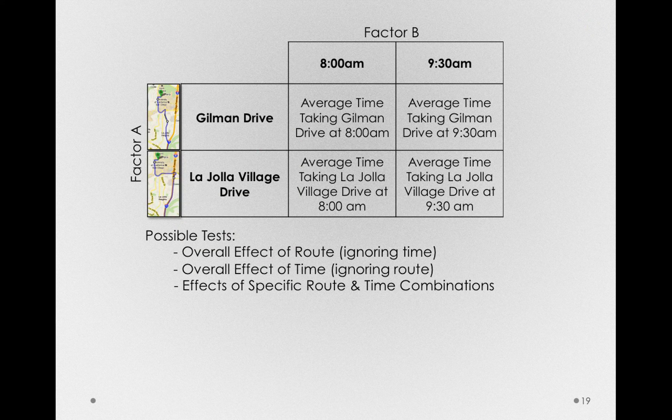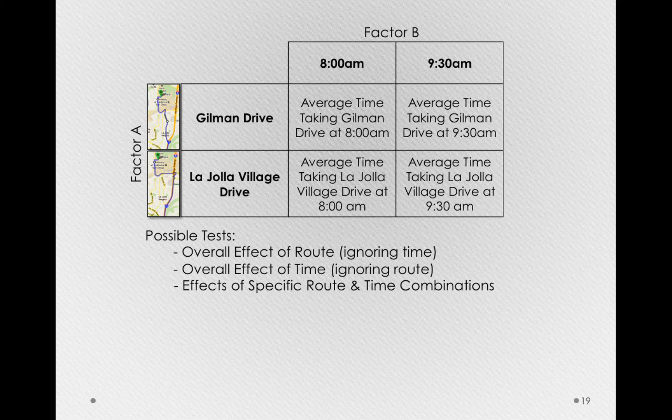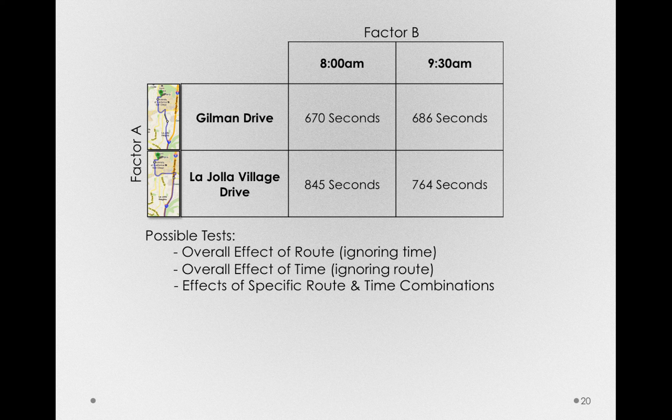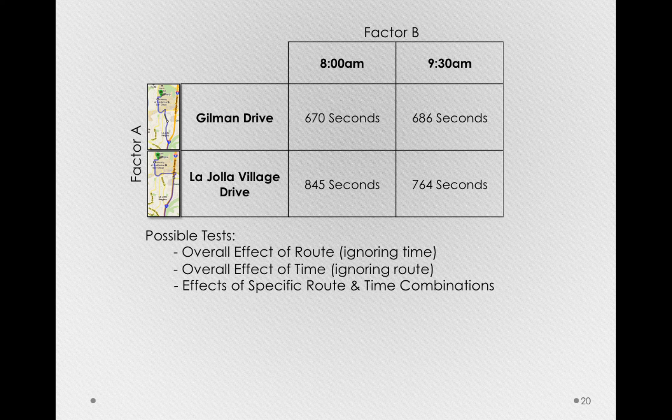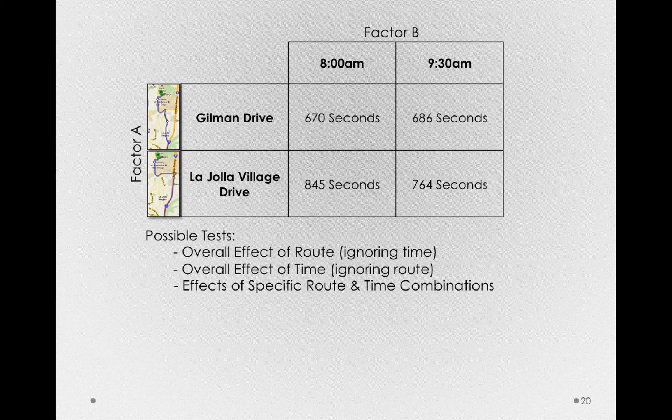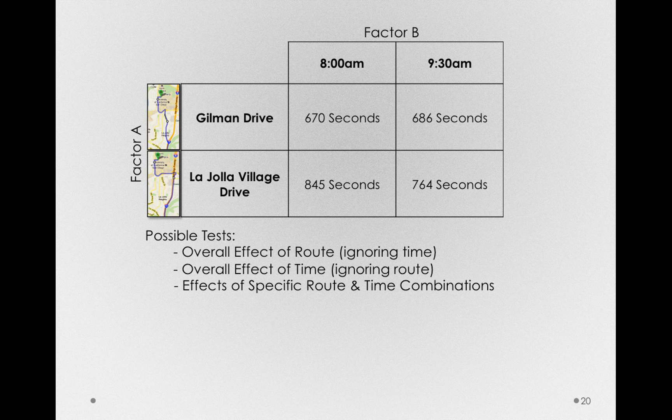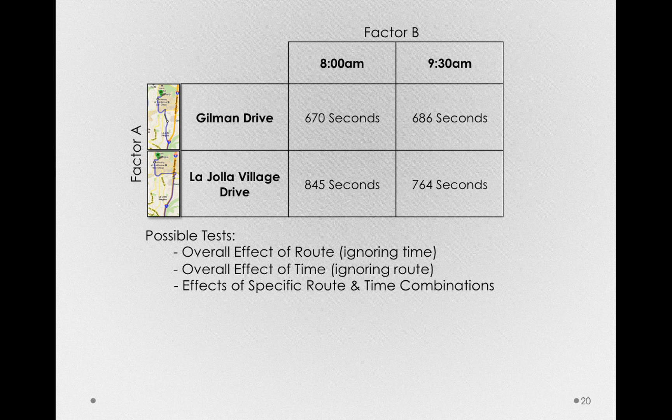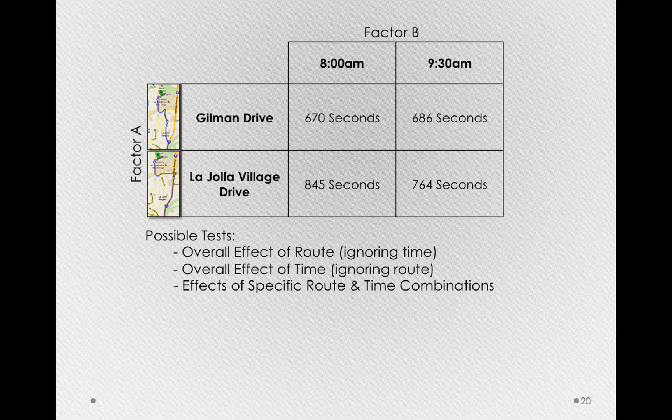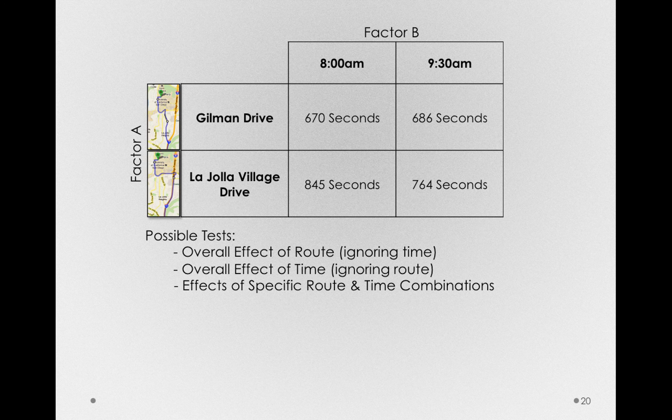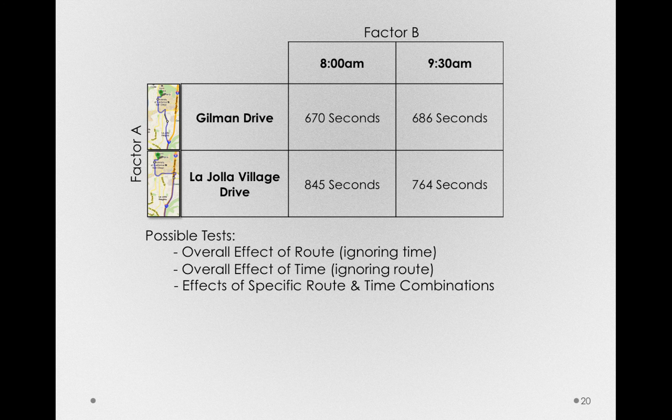So, in this case, we actually do have measurements in each of these combinations. That is, I actually can show you the average time it took me for each combination of factor A, the different routes, and factor B, the different times. And from these means, we're going to be able to test these three separate tests. The overall effect of route, ignoring time, the overall effect of time, ignoring route, and the effect of a specific route and time combination.